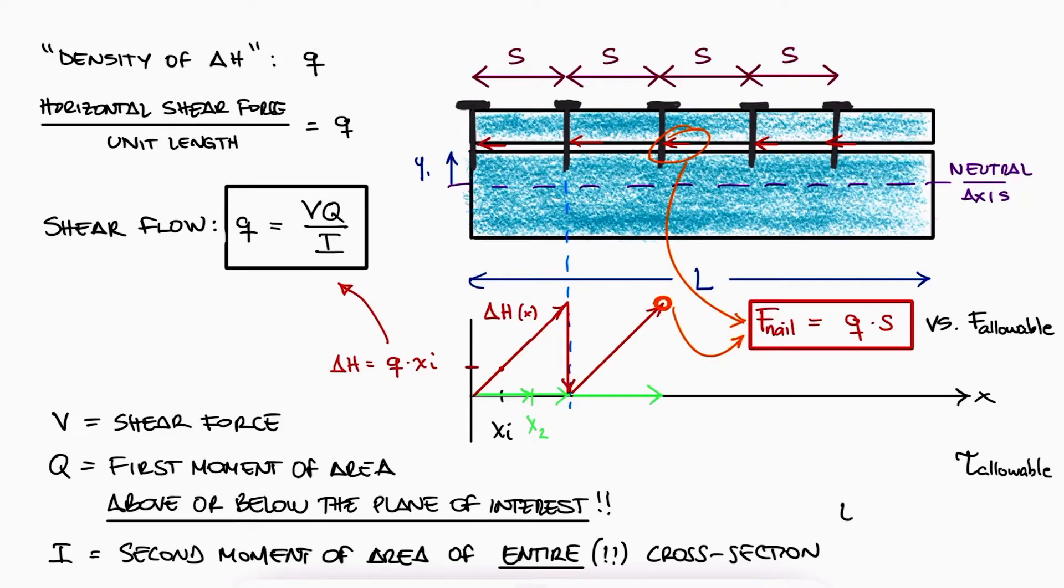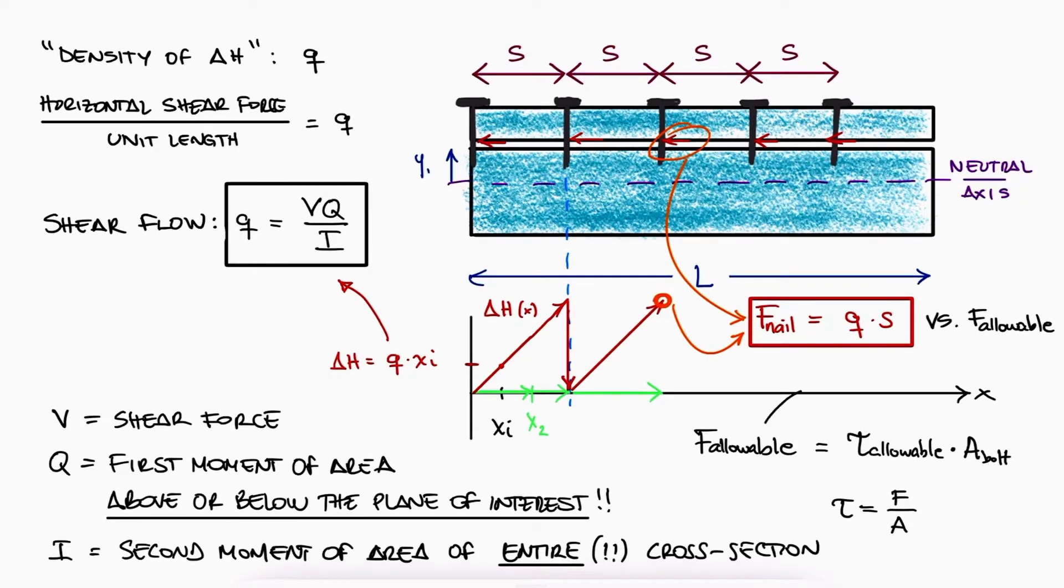In that case, since direct shear is shear force over area, we can multiply that maximum allowable shearing stress of the bolt times the circular cross-section area of its body to find the maximum allowable force, so that we can compare it to the delta H force of each nail or bolt.